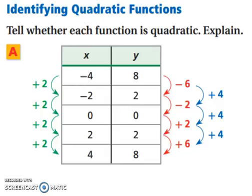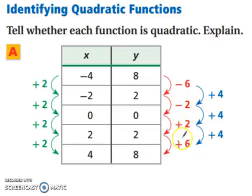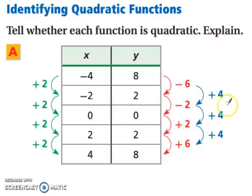Let's look at an example — identifying quadratic functions. Tell whether each function is quadratic and then explain. Notice how our x values keep increasing by 2. For the y values, the first differences are minus 6, minus 2, plus 2, plus 6. The first differences are not the same, so it's not linear. Now let's check our second differences: plus 4, plus 4, and plus 4. The second differences are the same, so it's quadratic.